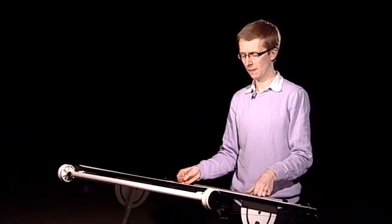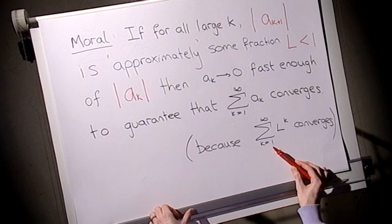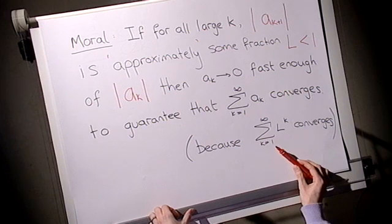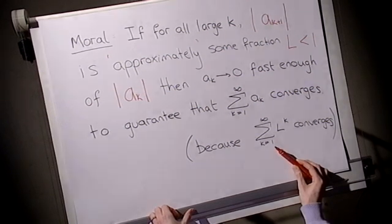Why is that going to happen? For the same reason that the infinite sum of l to the k converges as a geometric series. That's the idea of the proof and the theorem. So let's do that now for an example. Here's an example.